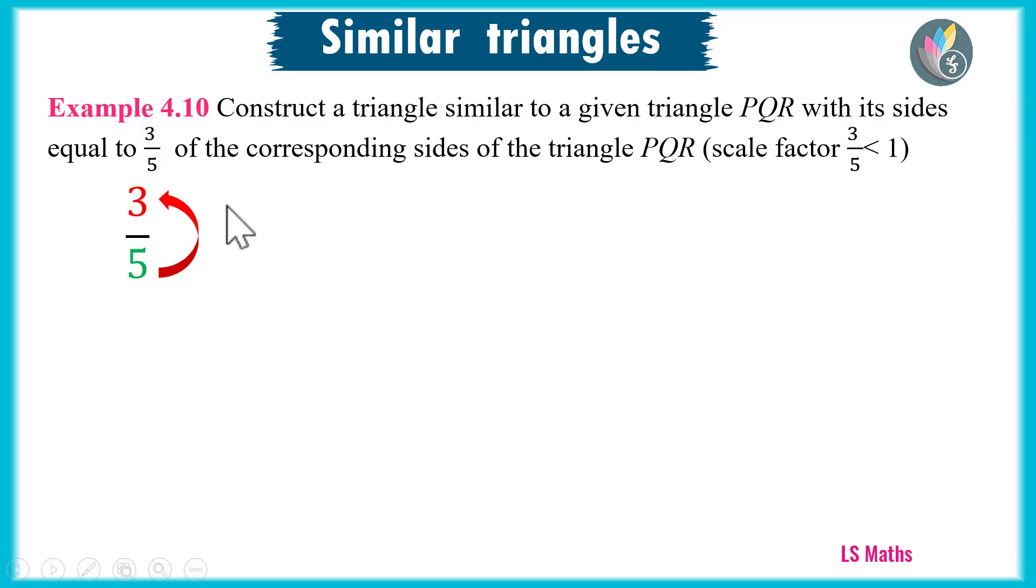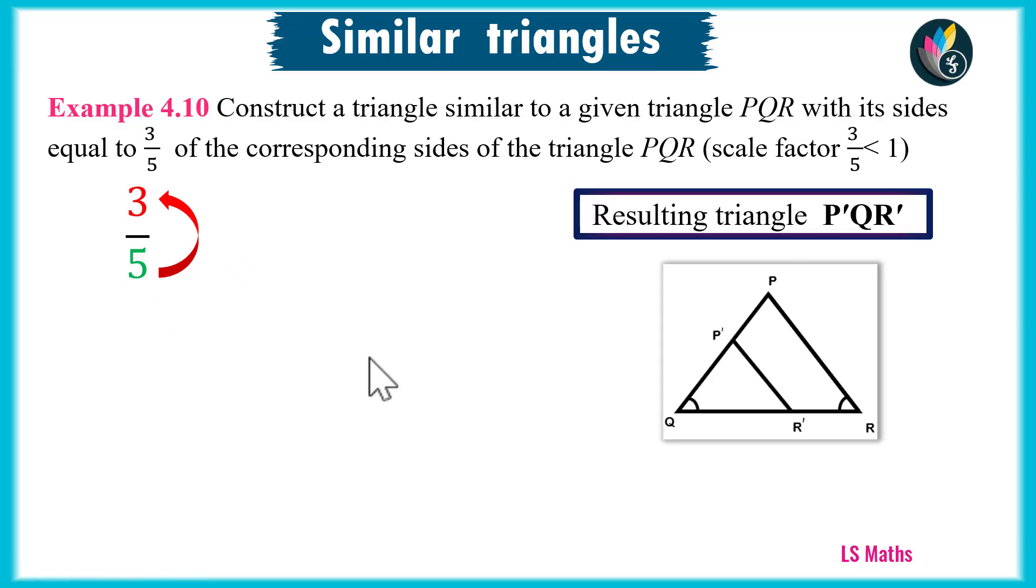Here, 3 is smaller, 5 is bigger. This means what? Bigger to smaller. Bigger to smaller. The resulting triangle P' Q R' will look like this.